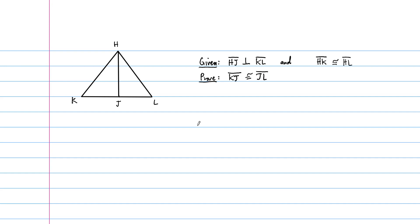In this example, we're given a picture of a triangle with some kind of segment that connects a side to an opposite angle. It turns out this is an altitude, because we're told that HJ is perpendicular to KL. We're also told that HK is congruent to HL, so these two sides have congruent lengths, making this an isosceles triangle. We are asked to prove that KJ is congruent to JL.